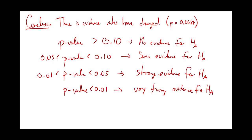Our pass rate p-value of about 0.0688 shows some evidence that rates have changed, but it's not super convincing — we might want bigger samples. The muffin example had a p-value of about 0.0055, which is below 1% — that's really strong evidence. High p-values are very slim evidence; low p-values are very strong evidence.